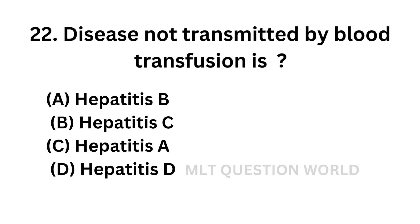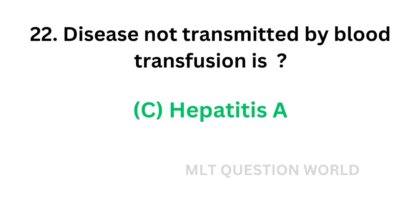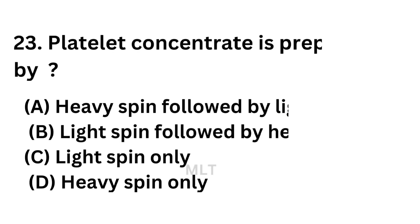Quiz No. 22. Disease not transmitted by blood transfusion. Option A: Hepatitis B. Option B: Hepatitis C. Option C: Hepatitis A. Option D: Hepatitis D. The correct answer is Option C — Hepatitis A, because Hepatitis A is transmitted through contaminated food and water, not by blood transfusion.